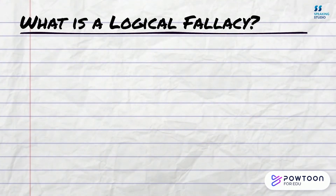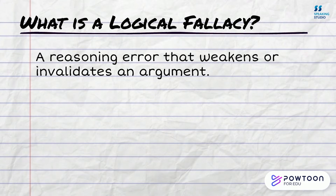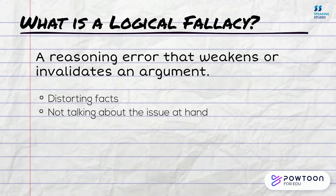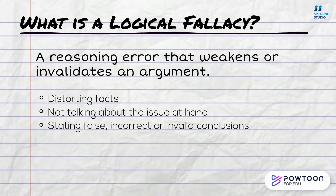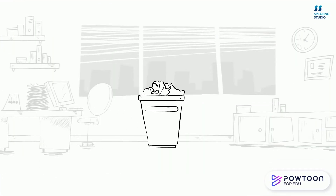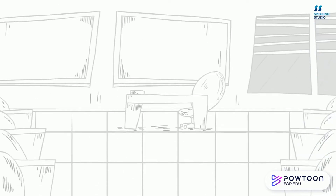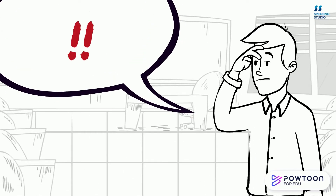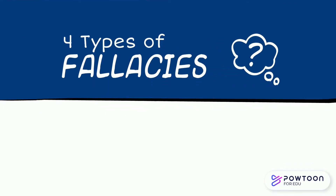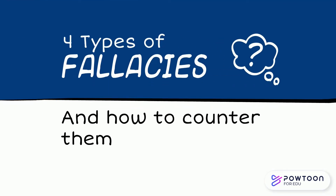A logical fallacy is a reasoning error that weakens or invalidates an argument. This could be distorting facts, not actually talking about the issue at hand, or stating false, incorrect, or invalid conclusions. It's important to be able to identify them because it allows you to prevent yourself from having fallacies in your own arguments. So in this video, we're going to cover four main types of logical fallacies and how to counter them.